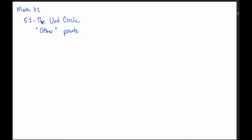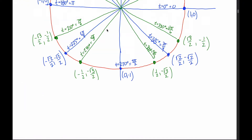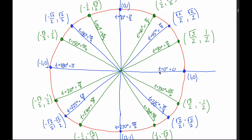In this video we're going to continue talking about the unit circle, so 5.2 in your text. What we're going to talk about now are other points. In the previous video I focused on these 16 special points that are really important, and we want to memorize the angle measures both in degrees and radians and their x and y coordinates. But the unit circle is really the thing in red, not just the little points in green and blue, and there are lots more points on the unit circle than just those depicted.